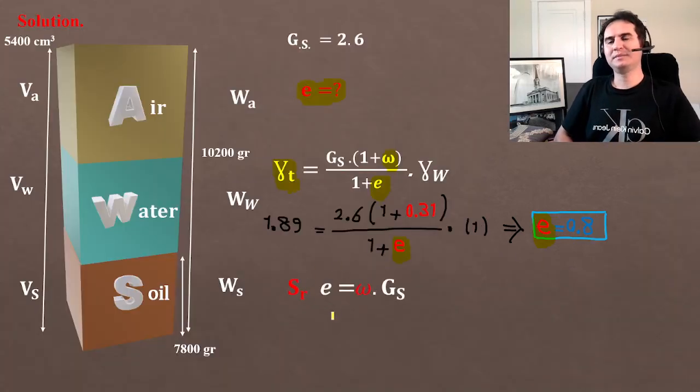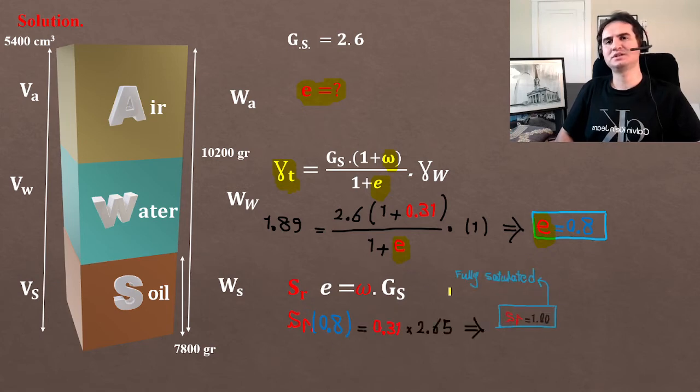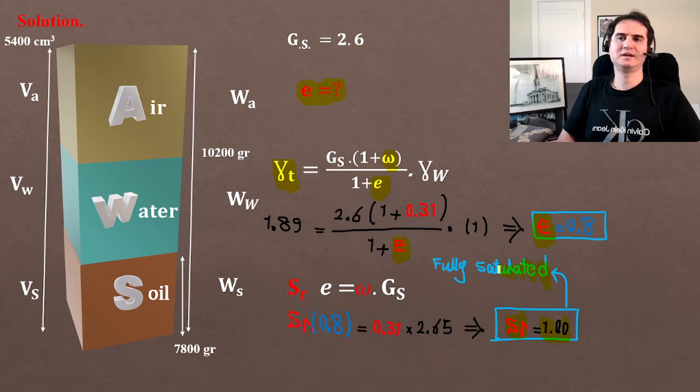At the same time, SR times e equals moisture content times Gs. If you do the calculation, it gives you SR of 1, which says our sample was fully saturated.